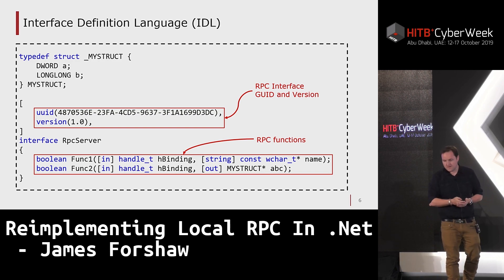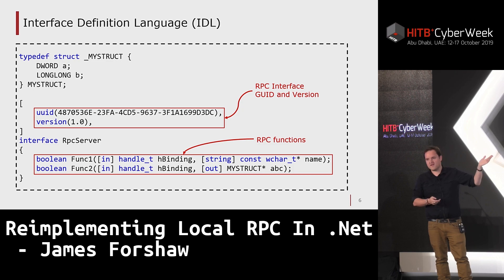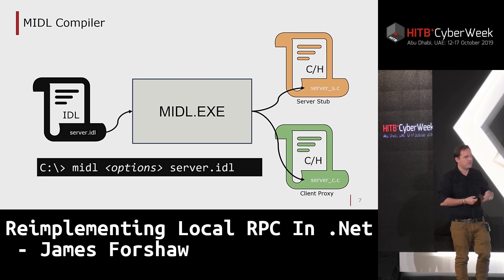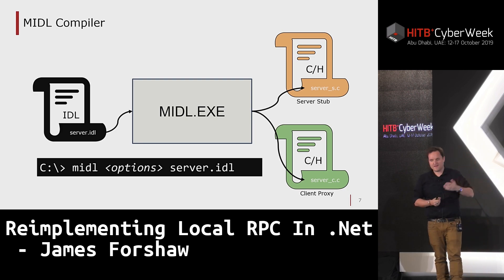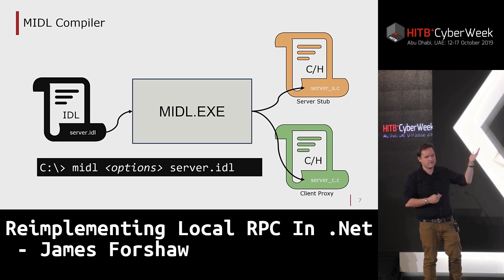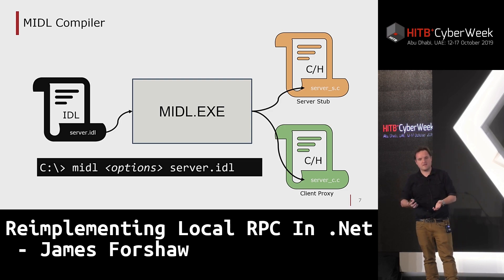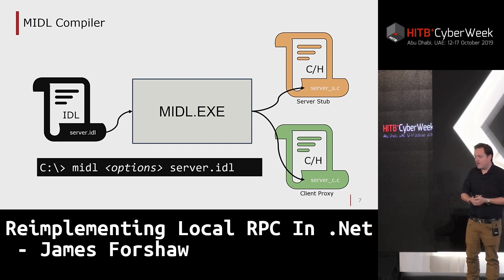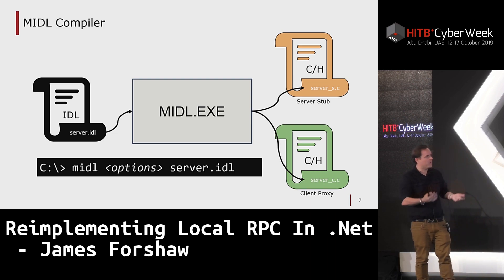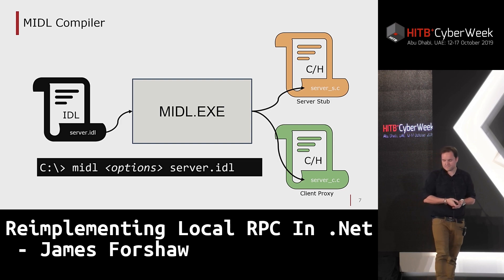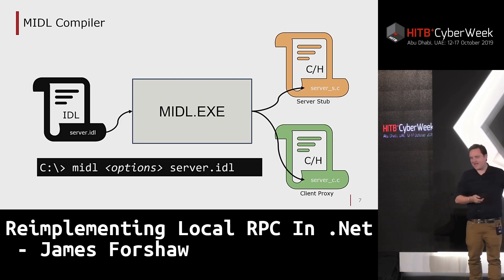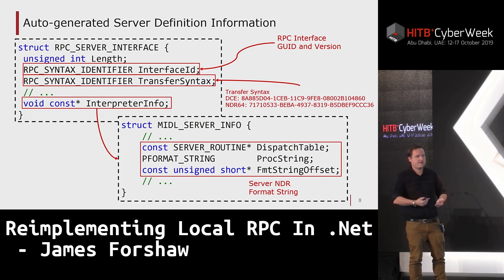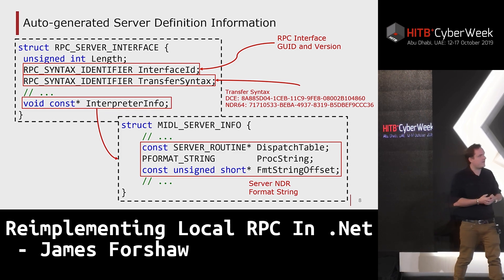You take this IDL file — which contains only definitions, no actual code — and pass it through the MIDL compiler, the Microsoft IDL compiler, which comes as part of the Windows SDK. It takes the IDL file and produces two main files: a server stub, which is the skeleton implementation for your server, and a client proxy, the skeleton implementation for your client. Both are C files for compiling into a native application, and of course if we're dealing with .NET, that causes us a problem.